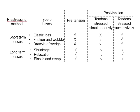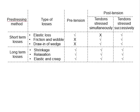There are two main types of pre-stressing methods: pre-tensioning and post-tensioning. Pre-tensioning involves stressing the tendon before the casting of concrete, whereas for post-tensioning the tendon is stressed after casting of the concrete.